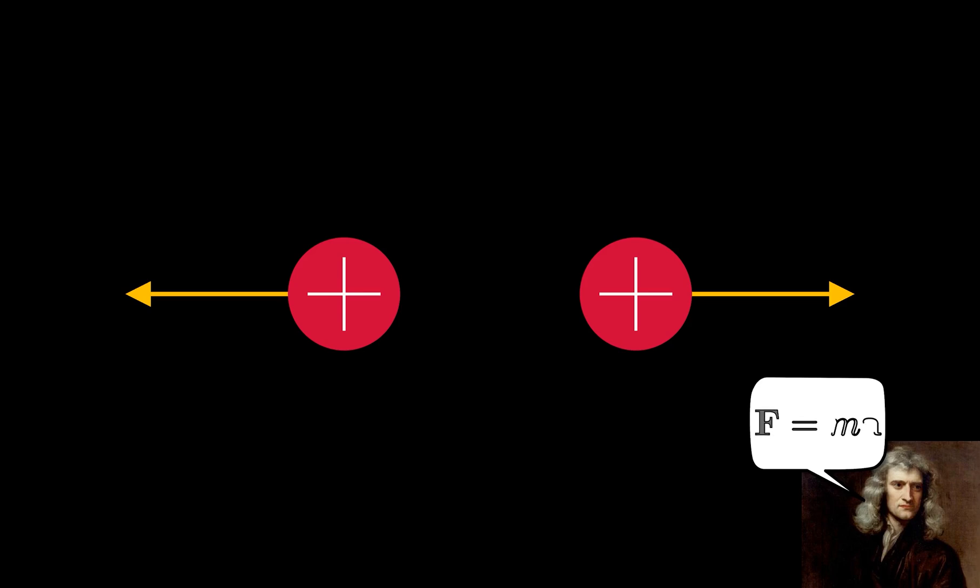Common sense and experience tell us that these charges repel from each other. According to Isaac Newton, any change in an object's motion, that is, an acceleration, requires force, so we can deduce that some force exists between these two charges, which we'll call Fe, the electrostatic force. Newton's third law also tells us that every reaction requires an equal but opposite reaction, so each charge exerts an equal but opposite force on the other.